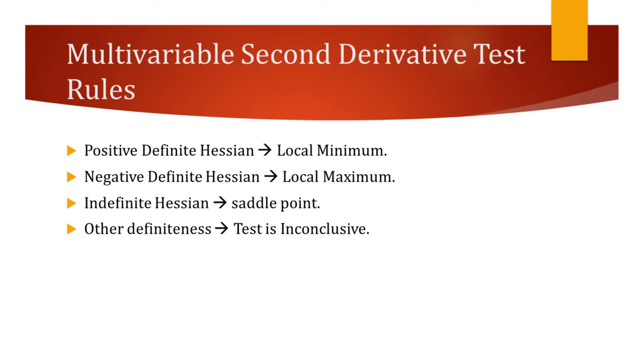Based on the definiteness of the Hessian matrix, the nature of the critical point can be determined very easily. When the Hessian of a function at the critical point is positive definite, or in other words, when every eigenvalue of the Hessian is a positive number, it can be concluded that the critical point is a local minimum.